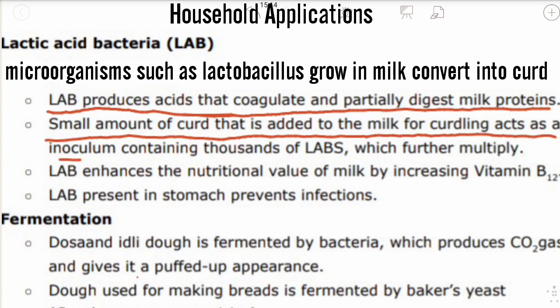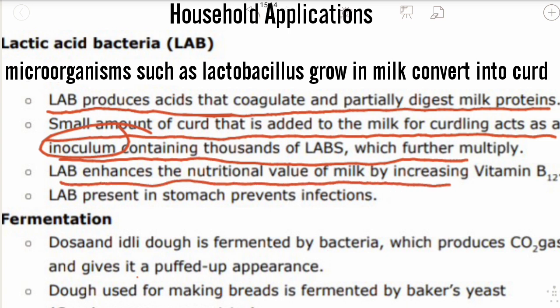A small amount of curd added to milk acts as an inoculum — that is, a starter — containing thousands of LAB which further multiply. This small amount of curd must be added at a suitable temperature, and the lactic acid bacteria multiply and bring about curdling.